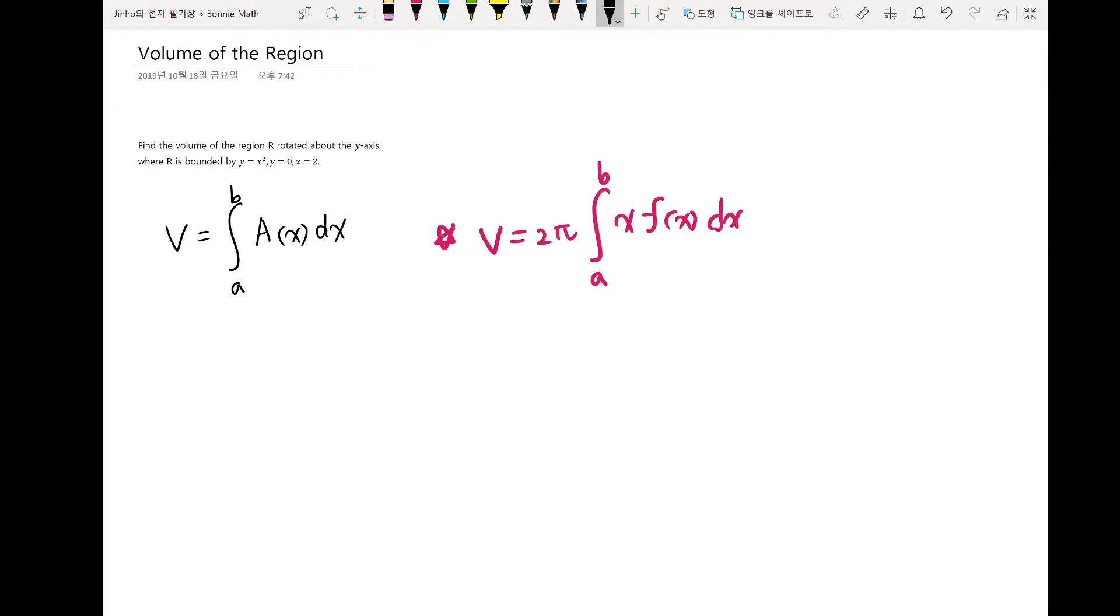Start with the drawing, what they mean. So if our graph looks like this, and we have y equal to x square, this is y equal to x square, and we have y equal to 0, x equal to 0, and x equal to 2.